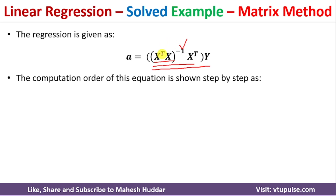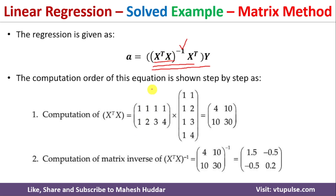First we calculate X^T * X. Writing out X transpose and multiplying: the first row times the first column gives 1+1+1+1 = 4. The first row times the second column gives 1+2+3+4 = 10. The second row times the first column gives 10, and the second row times the second column gives 30. So X^T * X equals the matrix [[4, 10], [10, 30]].